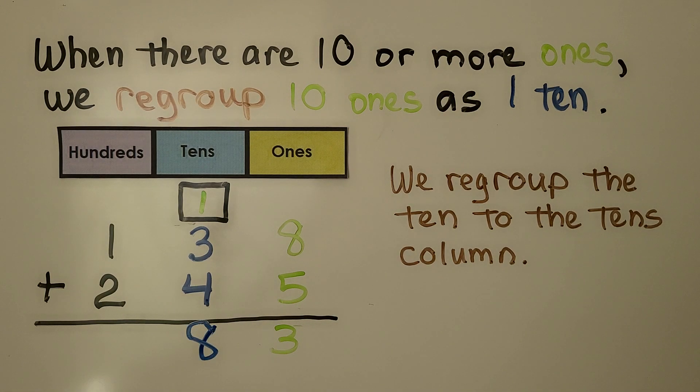Then we add the hundreds. We have 100 plus 200. That's 300. It's equal to 383.